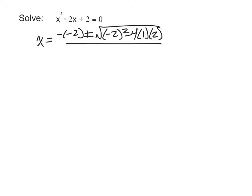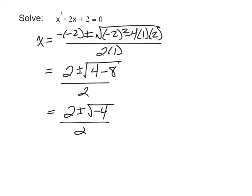When we start simplifying that, we'll have 2 plus or minus the square root of—negative 2 squared is 4, and 4 times 2 is 8, so 4 minus 8—all over 2. Now we get to this point where we're going to want to simplify the square root of negative 4, which of course we can't do because we can't take a square root of a negative number.